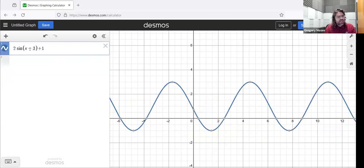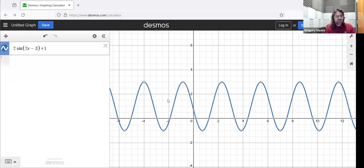If I add a B and a C and a D, well, the function's changed. But its maximum value is three, its minimum value is negative one. The distance between them is four. Half of four is two.